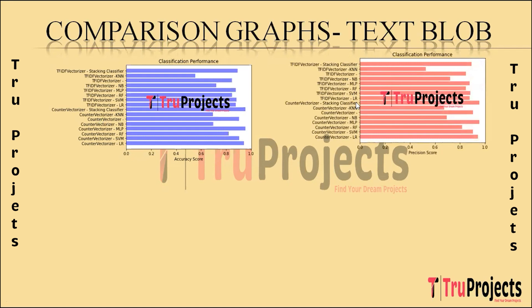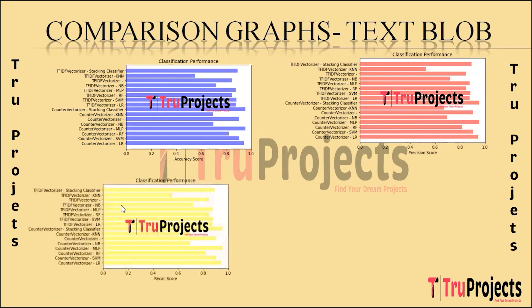This is the precision scores comparison graph, with precision scores on the X-axis and algorithm names on the Y-axis. Precision measures the accuracy of positive predictions, indicating how many predicted positives were actually correct. This is the recall scores comparison graph, with recall scores on the X-axis and algorithm names on the Y-axis. Recall measures the ability to identify all relevant instances, showing how many actual positives were correctly predicted.